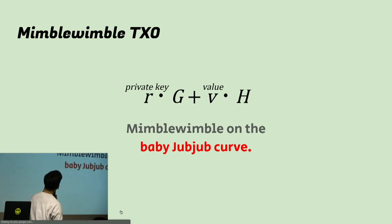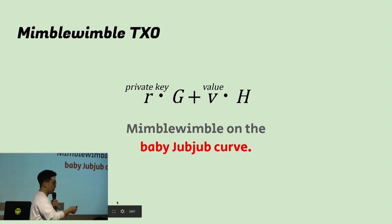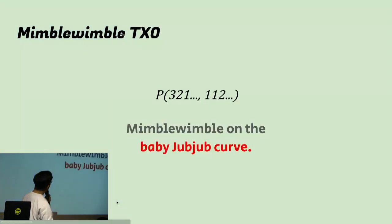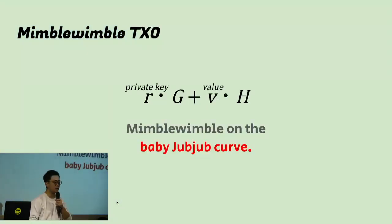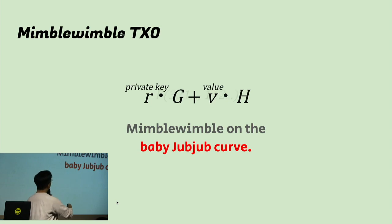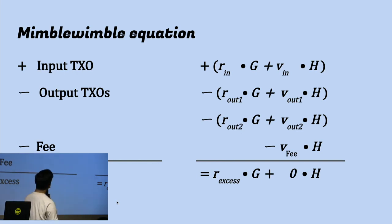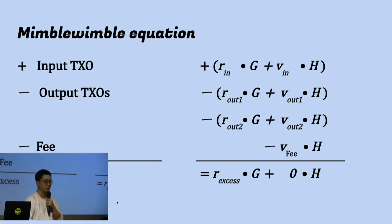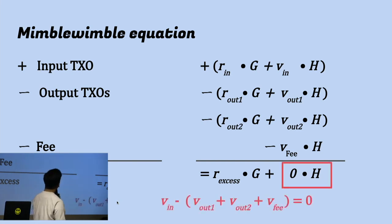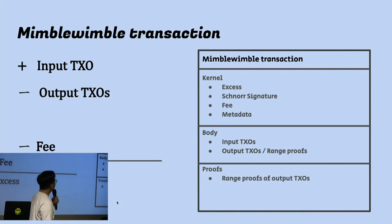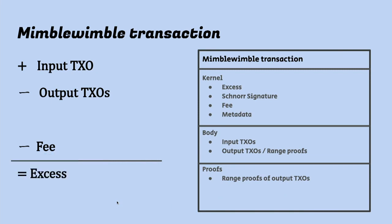This is the basic form of MimbleWimble, and everything can be connected on the Baby JubJub curve. We can hide the value of the transaction and the private key using the Pedersen commitment. Because of the input TXO and output TXO relationship, we can prove that no money is printed out of thin air. A MimbleWimble transaction is composed of a kernel and body.